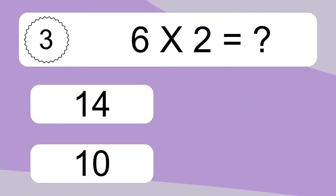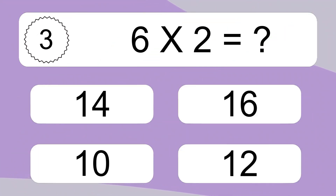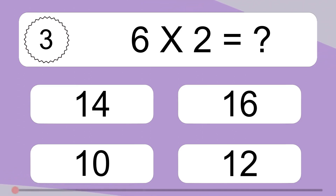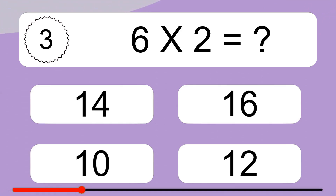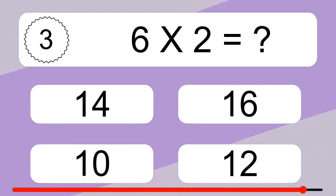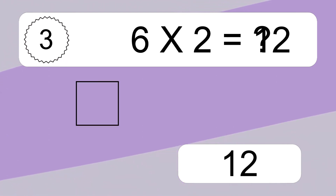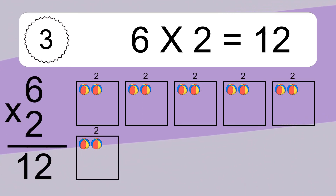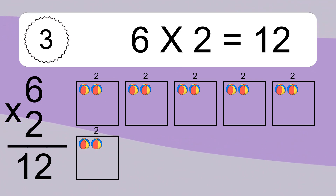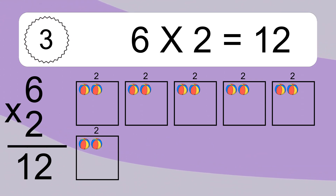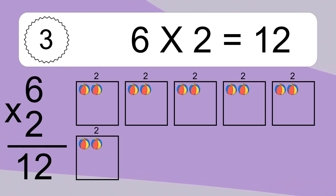6 times 2 equals what? 6 times 2 equals 12. We have 6 boxes, and each box has 2 colorful balls inside. If you count all the balls in all the boxes together, you will have 6 times 2 balls. This equals 12 balls.